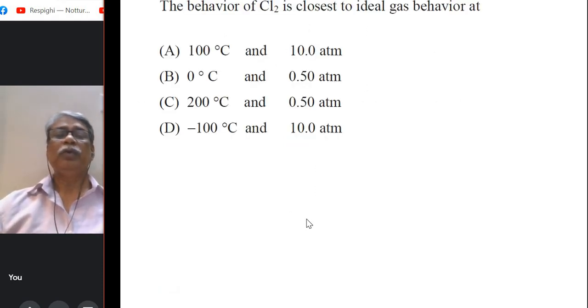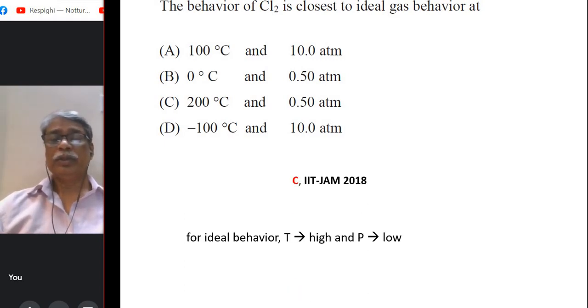The behavior of Cl₂ is closest to ideal gas behavior. You do not need to use any formula or calculate anything actually, only have to have the knowledge that real gas behaves ideally when temperature is too high and pressure is too low. So out of these 4 options, you can easily see that option C, temperature is the highest one and at the same time pressure is the least one. So option C is the closest right.